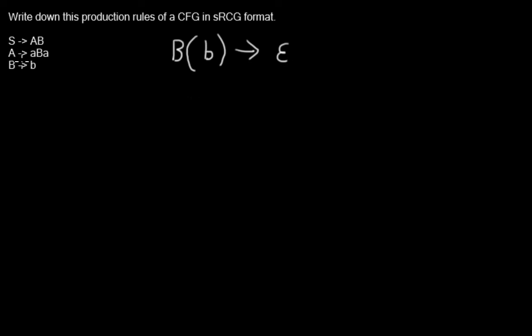Now the next rule, A expands to aBa. It's a little bit more complicated. This now depends on any string the B item will generate and I will replace, I don't know at this point what the B will generate, so I will replace it by the variable X.